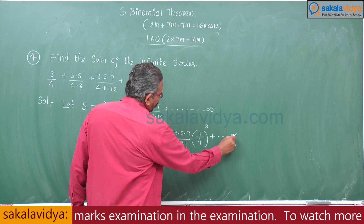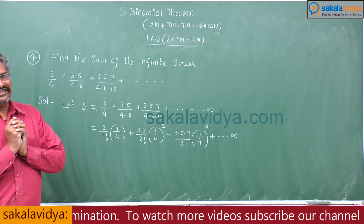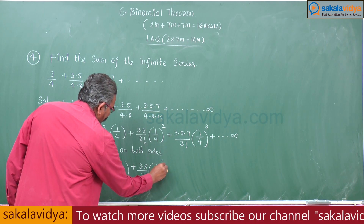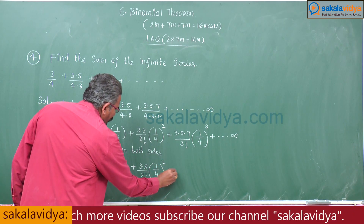Fourth problem: find the sum of the infinite series 3/4 + (3·5)/(4·8) + (3·5·7)/(4·8·12) + ... up to infinity. This seems to be an incomplete series. If an incomplete series is given, we have to complete it.